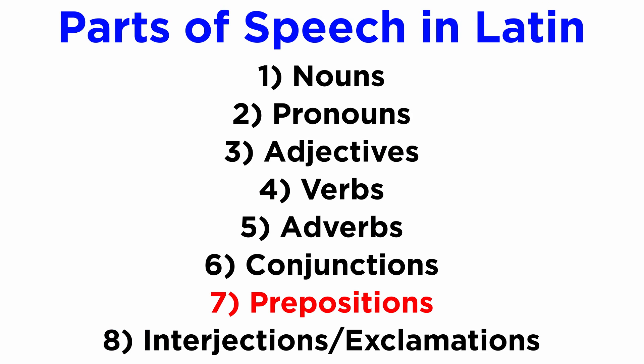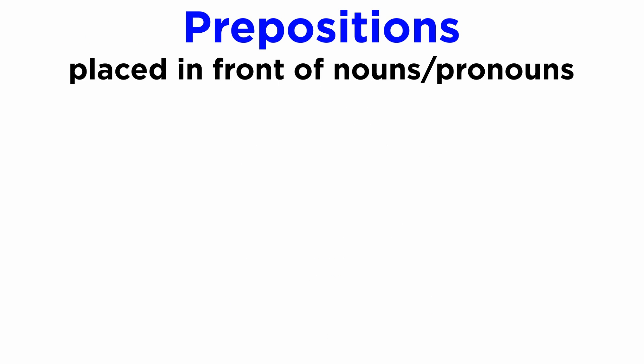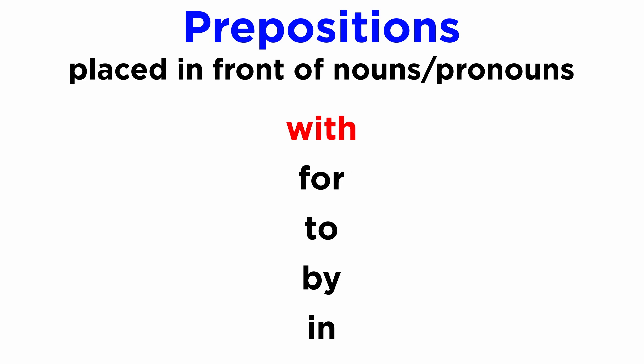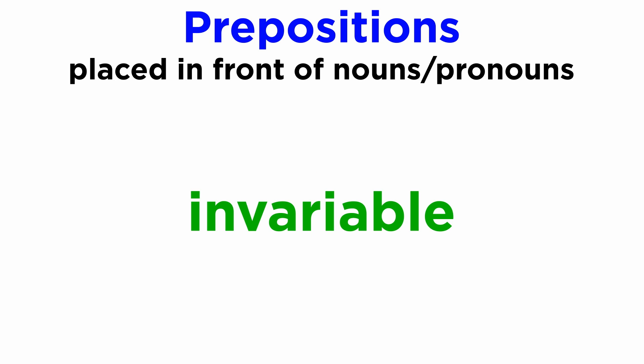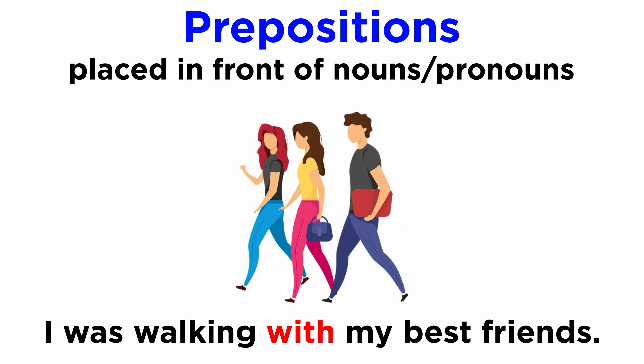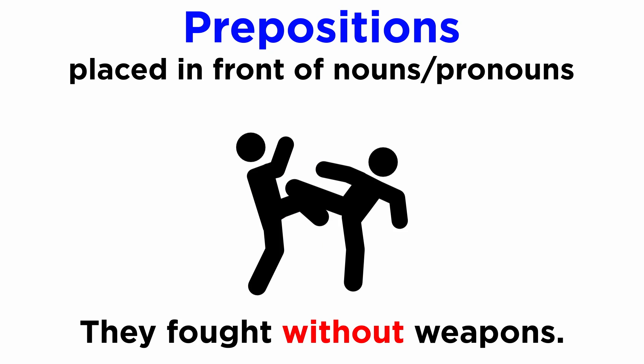Next come prepositions. These words are always placed in front of nouns and pronouns, and they may take many different meanings. With, for, to, by, and in are all prepositions. These will also be invariable in Latin. For example: I was walking with my best friends; they fought without weapons.